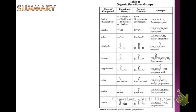To summarize: use table R, know how to use it, and don't be afraid of the examples — they're there to help you. The name endings are: chloro for halides, OL for alcohols, ether for ethers, AL for aldehydes, ONE for ketones, oic acid for organic acids, oate for esters, amine for amines, and amide for amides. Please use table R. Have a great day.